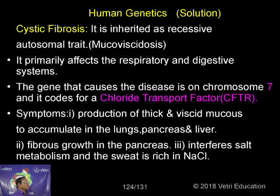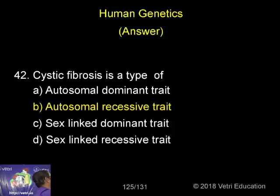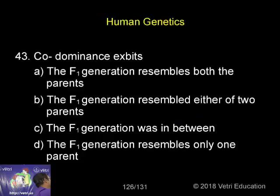Fibrosis actually occurs in the pancreas, and the secretion of the pancreas is affected. That is why it is called cystic fibrosis — an autosomal recessive genetic disorder.